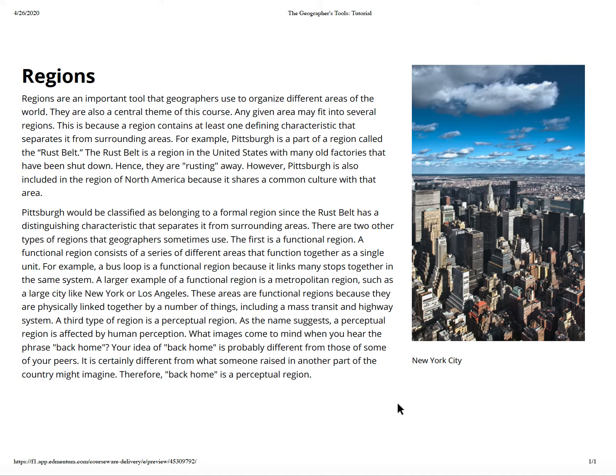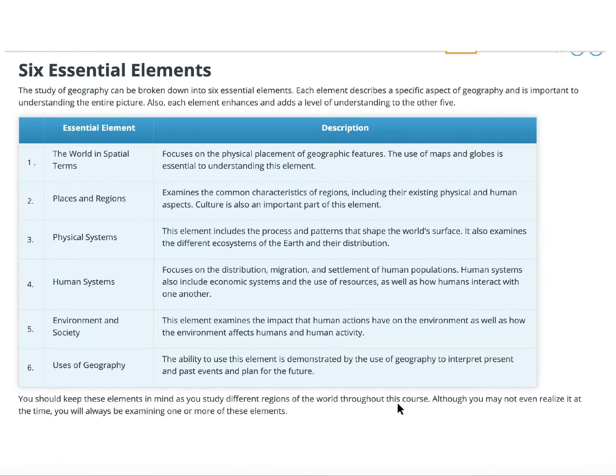A third type of region is a perceptual region. As the name suggests, this is affected by human perception. What images come to mind when you hear the phrase 'back home'? Your idea of back home is probably different from those of your peers. It is certainly different from what someone raised in another part of the country might imagine. Therefore, 'back home' is a perceptual region.